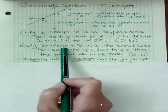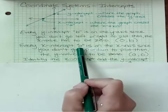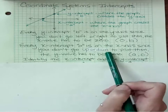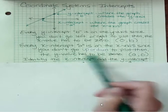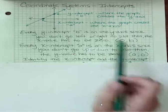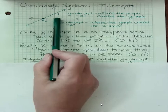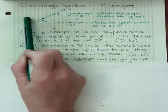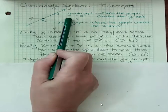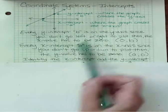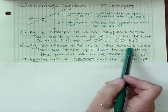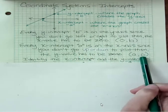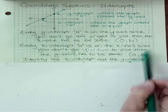Every x-intercept, which we could call lowercase a, is on the x-axis. And since you don't go up or down to plot them, the y value has to be zero. Notice if we're here, we went backwards, but then we didn't go up or down. No matter where we go on the x-axis, if we don't go up or down, we're going to be right there on the x-axis. So that means that our y has to be zero. We could say our x-intercepts are a, zero.